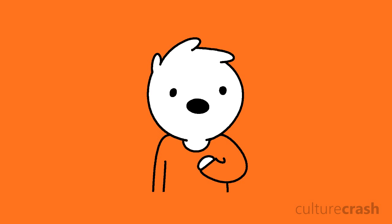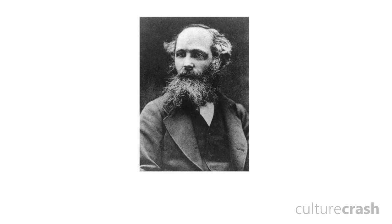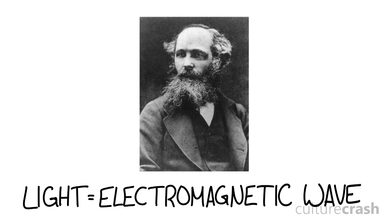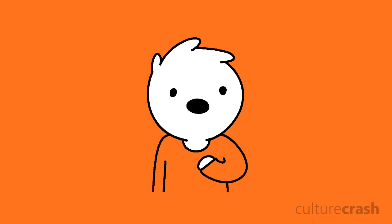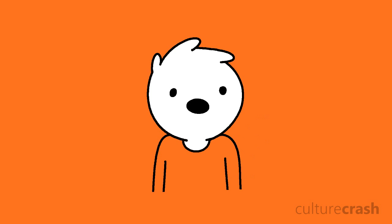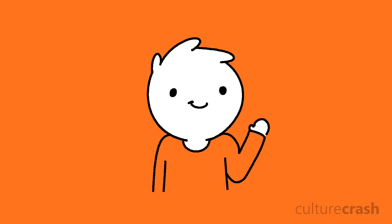Anyway, the next predominant theory came from Scottish physicist James Clerk Maxwell, who pretty much predicted and defined light as an electromagnetic wave in 1864. His four equations of electromagnetism, which I won't go into today, are the cornerstones of the field and link electrical fields to magnetic fields.